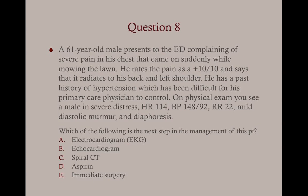Question eight: A 61-year-old male presents to the ED with severe chest pain that came on suddenly while mowing the lawn. He rates the pain 10 out of 10, saying it radiates to his back and left shoulder. He has a history of hypertension difficult to control. Physical exam shows a male in severe distress, heart rate 114, blood pressure 148/92, respirations 22, mild diastolic murmur and diaphoresis. Next step in management? A, EKG; B, echocardiogram; C, spiral CT; D, aspirin; E, immediate surgery? The answer is C, spiral CT.